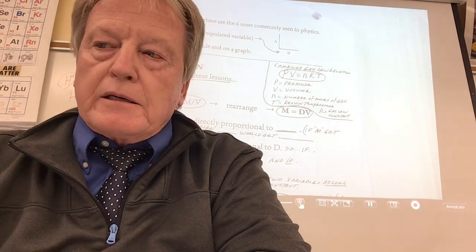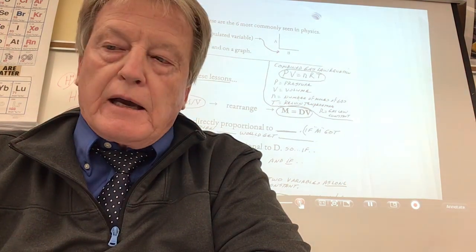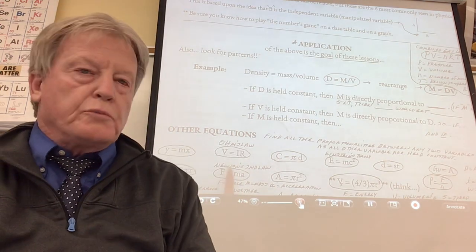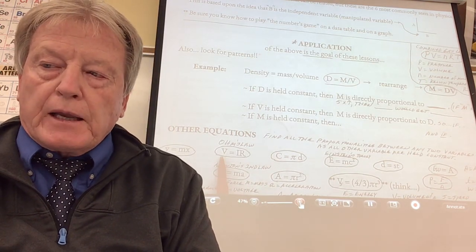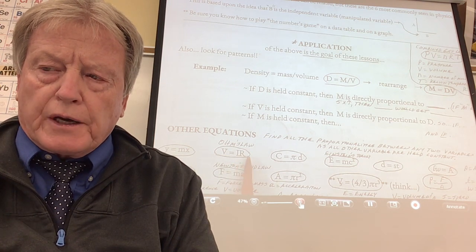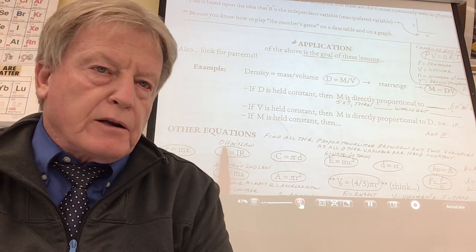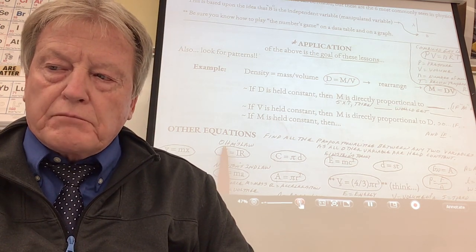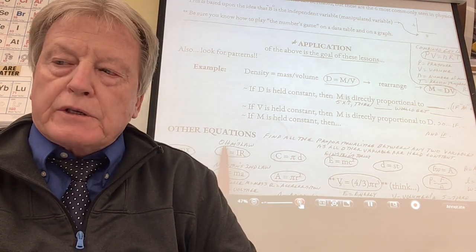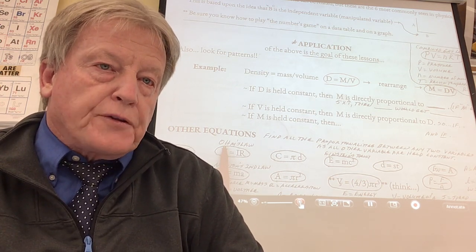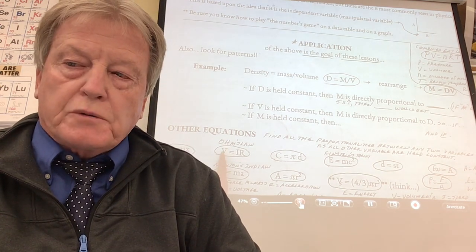It's a great application — you can just look at any equation and say, I know how they're related. So let's take probably the most famous equation in all of electricity: Ohm's Law. V stands for voltage, I is current, and R is resistance. If voltage is held constant, I and R are inversely proportional. If resistance got three times greater — you put in three times more light bulbs — the current would drop to one-third of what it used to be.